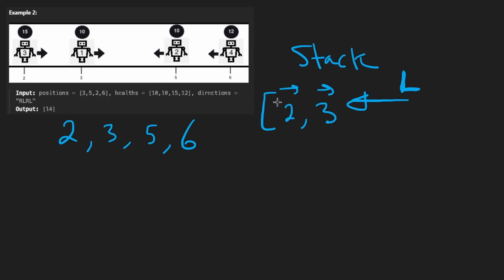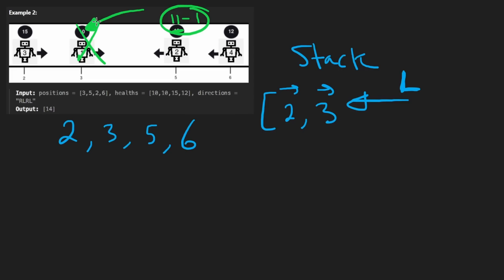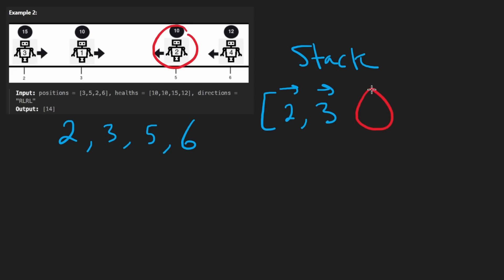Next we get the third robot. It's moving to the left, and the top of the stack is moving to the right, so we have a collision. The question is how do we handle that? In this problem, health is what matters. The health of this one is 10 and the health of this one is also 10 — if both robots have the same health, both are destroyed. So we decide never to add the left-moving one to the stack, and pop the right-moving one off the stack.